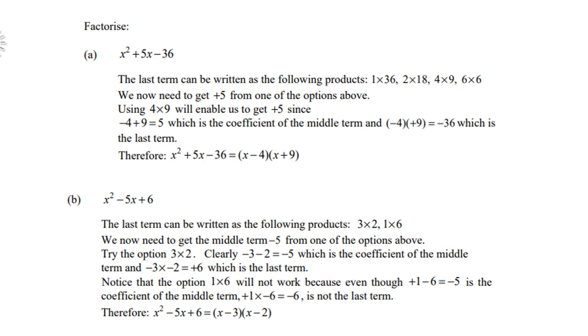So notice that the option 1 times 6 will not work, because even though 1 minus 6 is minus 5, is the coefficient of the middle term. But if you multiply, 1 times minus 6 is a negative 6, and it is not the last term. So therefore, x² - 5x + 6, the factors are (x - 3)(x - 2).